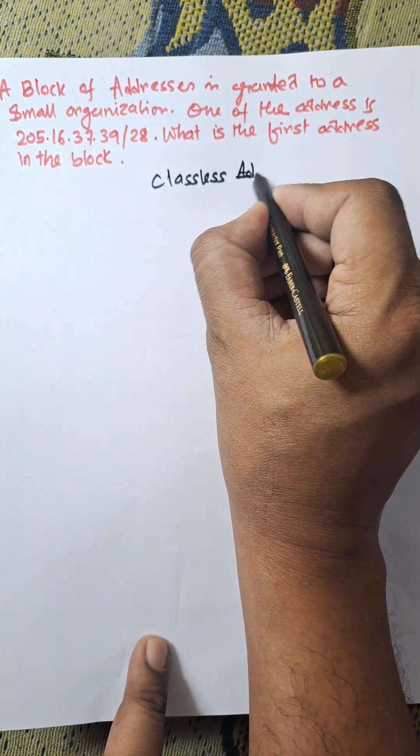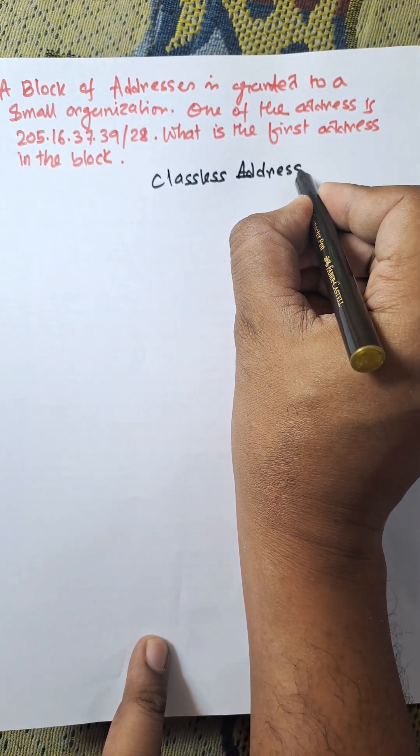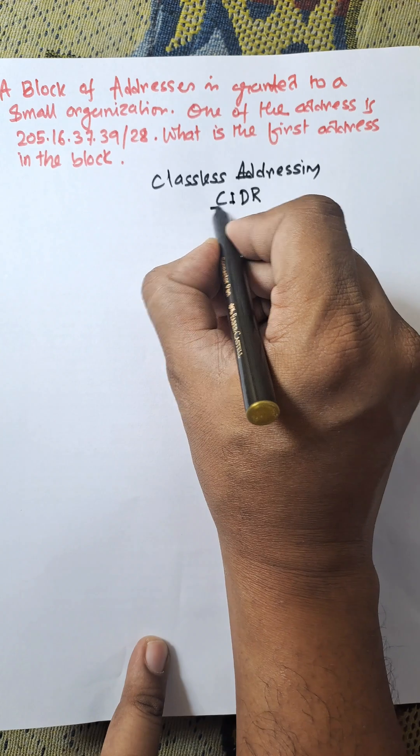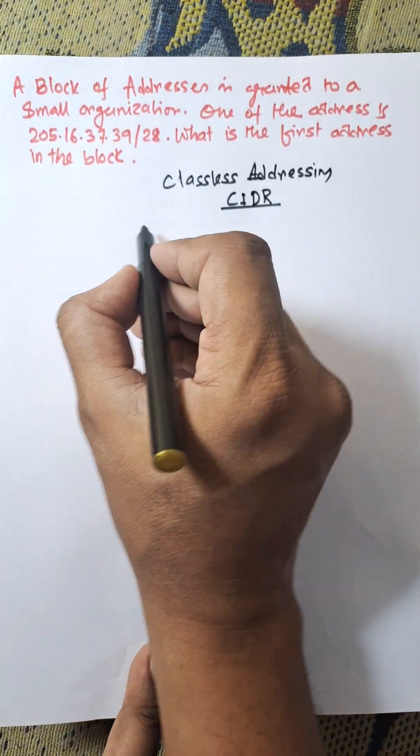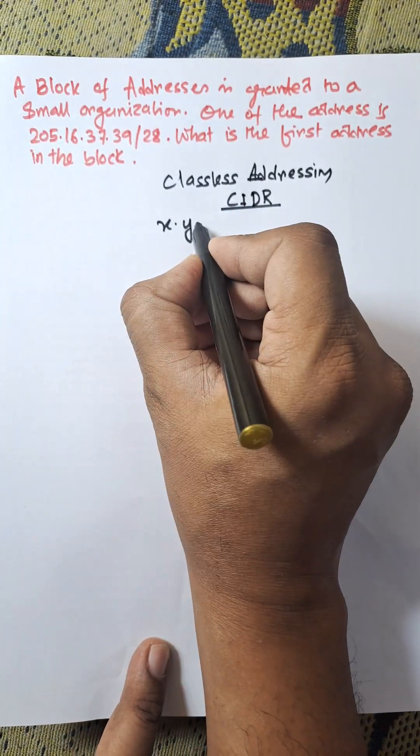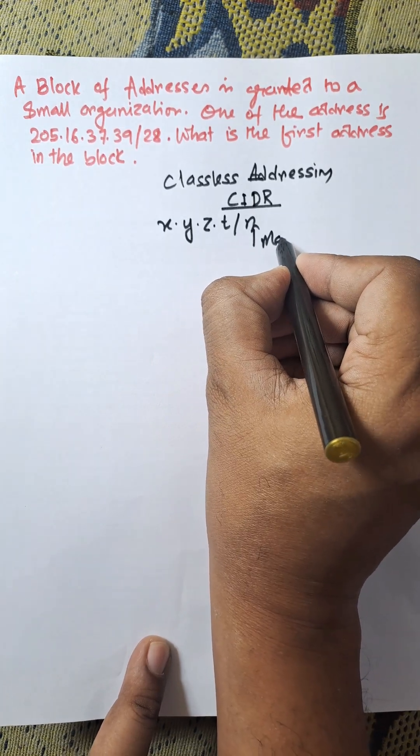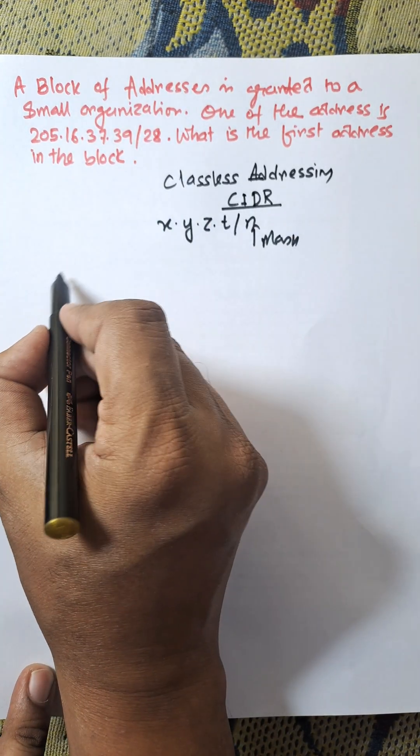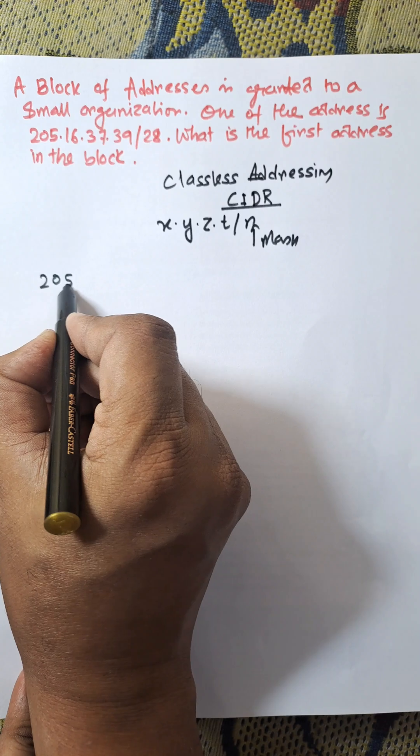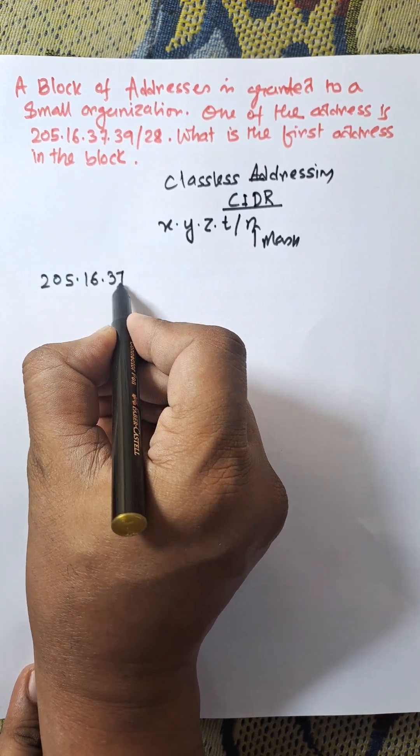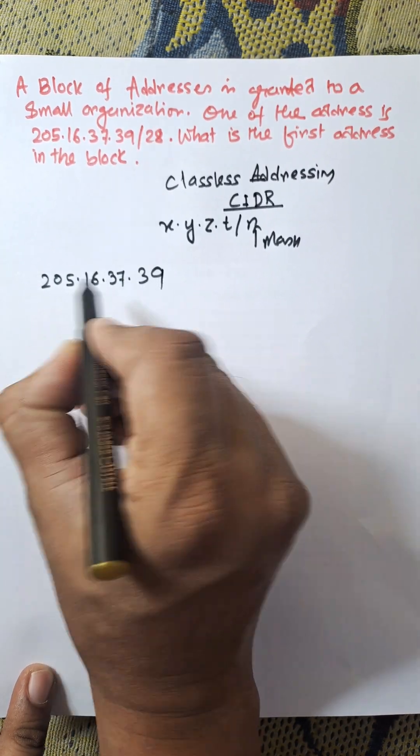In this addressing, we use CIDR notation, the Classless Interdomain Routing notation. Here in CIDR notation, x.y.z.t slash n, n is the mask. First of all, we need to find the binary value of the CIDR address that is 205.16.37.39. For 205...